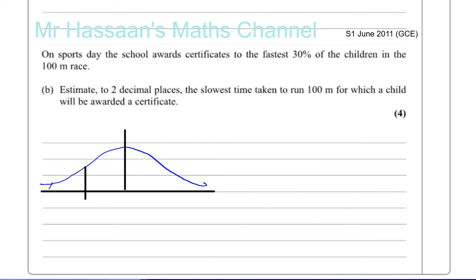We have to try to find out what this time is here, such that this area is 0.3 or 30%. We know the mean is 16.12, we know the standard deviation was 1.6. This was the information, 16.12 the mean and 1.60 the standard deviation.